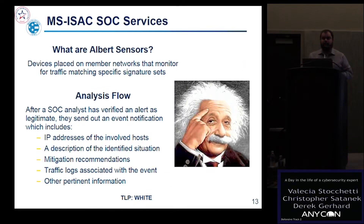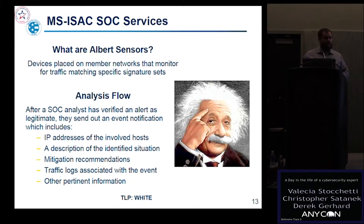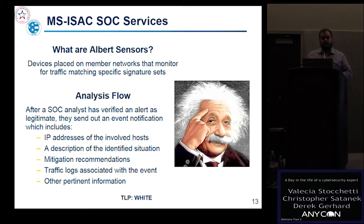Our Albert sensors are a unique network monitoring solution utilizing open source software refined to create SLTT-focused IDS signatures. Combined with in-depth analysis, we determine the nature and severity of observed traffic that triggered malicious activity. The general flow: the signature fires on the device, an alert is generated and sent to the SOC, we conduct analysis, determine if escalation is needed, and send it to the appropriate contacts.